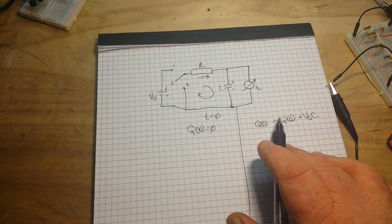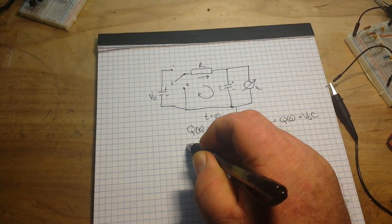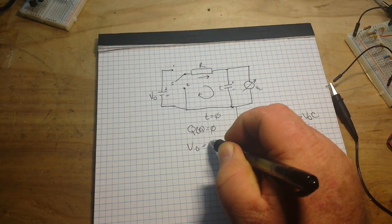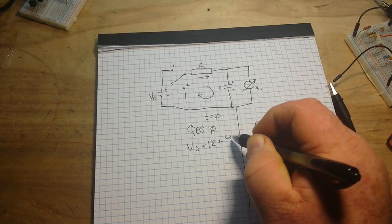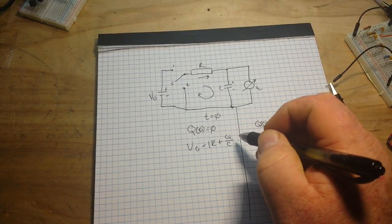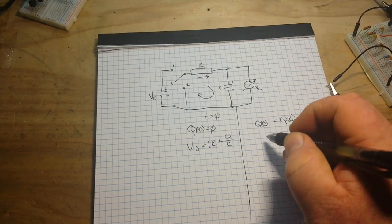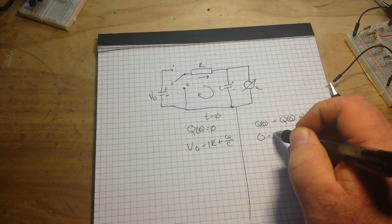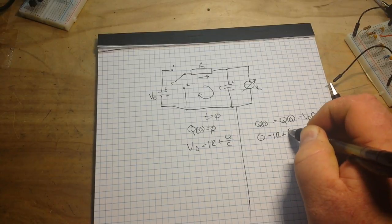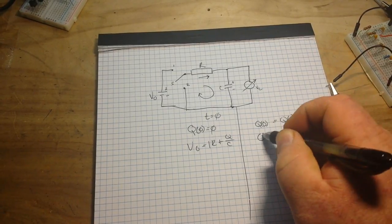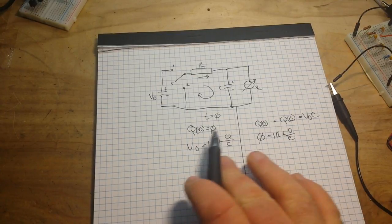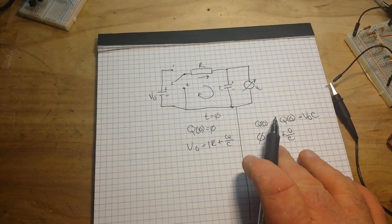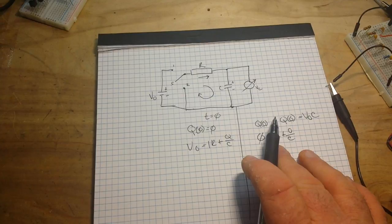Now if we use Kirchhoff's Law, we can find in our charge that V0 is equal to I times R plus Q over C. Or we can say the zero is equal to IR plus QC in our discharge. See how that works? We're flipping them back and forth. It's pretty simple.